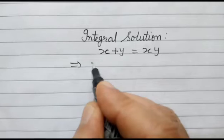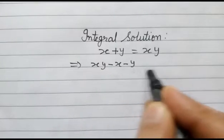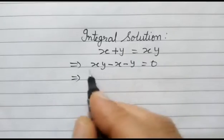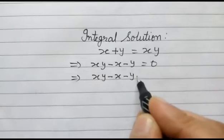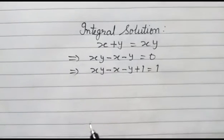Now we can write xy minus x minus y is equal to 0. In the next step, xy minus x minus y, if we add 1 on both the sides.